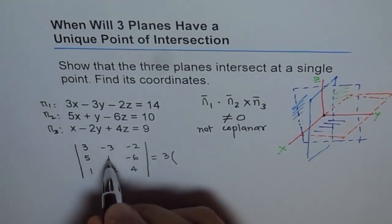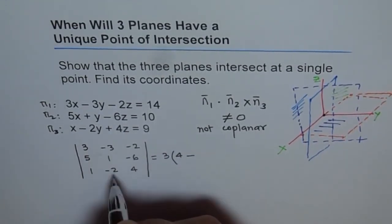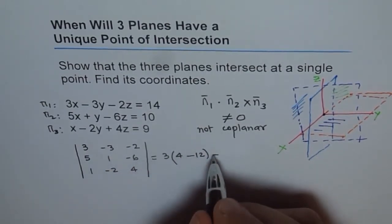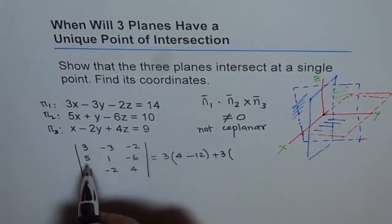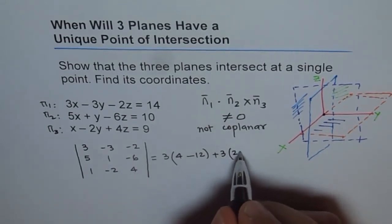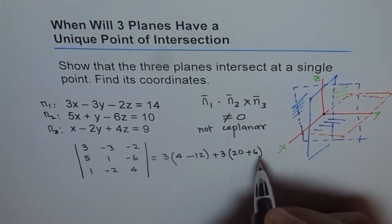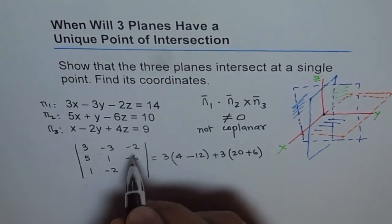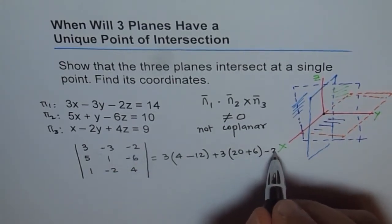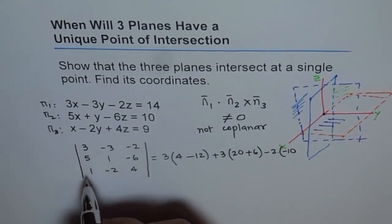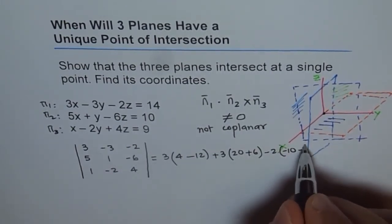And if you do that, you get 3 times, this is 4 minus 12, minus, minus 3 makes it plus 3, times 5 times 4 is 20, minus, minus 6 makes it plus 6. And then plus minus 2, which is minus 2, times 5 times minus 2 is minus 10, and 1 times 1 is minus 1.